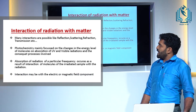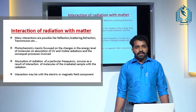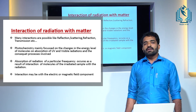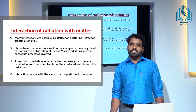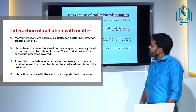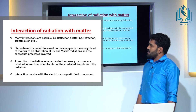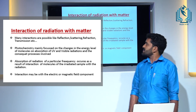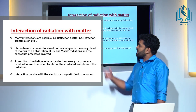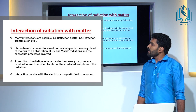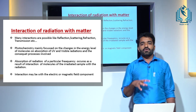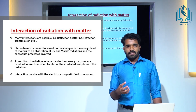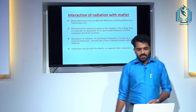Interaction of radiation with matter includes refraction, reflection, absorption, emission, etc. But here, photochemistry mainly focuses on the changes in the energy level of molecules on absorption of UV and visible radiations, and the consequent processes involved. Absorption of radiation occurs due to the interaction of matter with radiation, which may be with the magnetic field or electric field of the radiation.